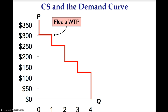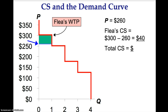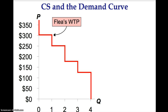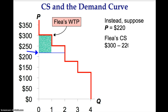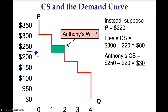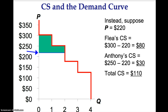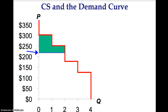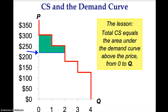We can see Flea's consumer surplus on the diagram by shading the area above the price and below his willingness to pay. Now let's suppose the price of the iPod equals $220. Flea's consumer surplus would be $300 minus $220, which equals $80. Anthony's consumer surplus would be $250 minus $220, which equals $30. Total consumer surplus is $110. The green shaded area represents consumer surplus — it is the area above the price and below the willingness to pay for both buyers. Total consumer surplus equals the area under the demand curve above price from zero to however many units are purchased.